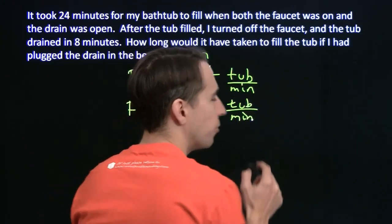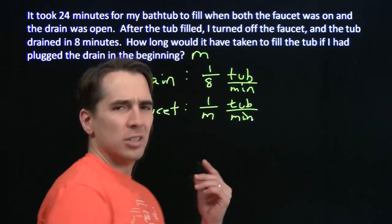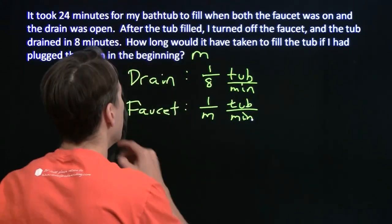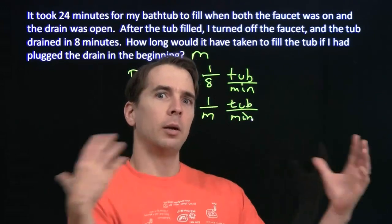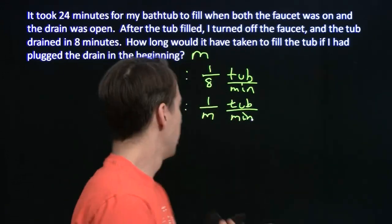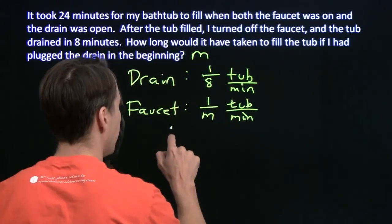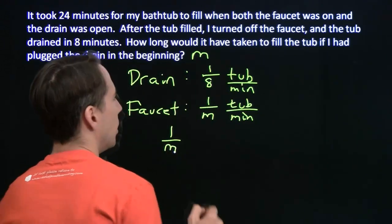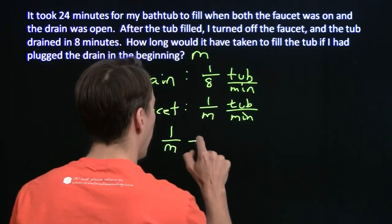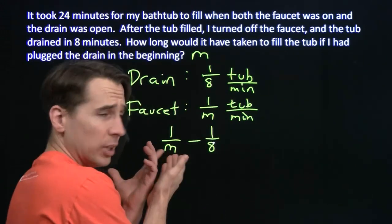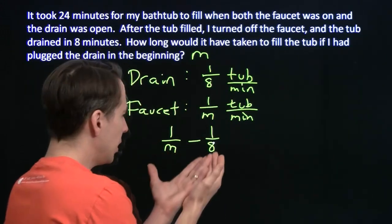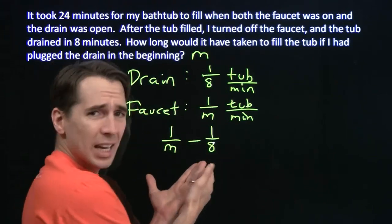Now, if the faucet would fill it up in ten minutes, that would mean it's going to fill up one-tenth of the tub each minute. So, now, when these two work together, they don't actually work together. They work against each other. The faucet, it's filling. The drain, taking away. It's taking away. So, the faucet's filling. This is how much of the tub it fills each minute. This is how much the drain is taking away each minute.